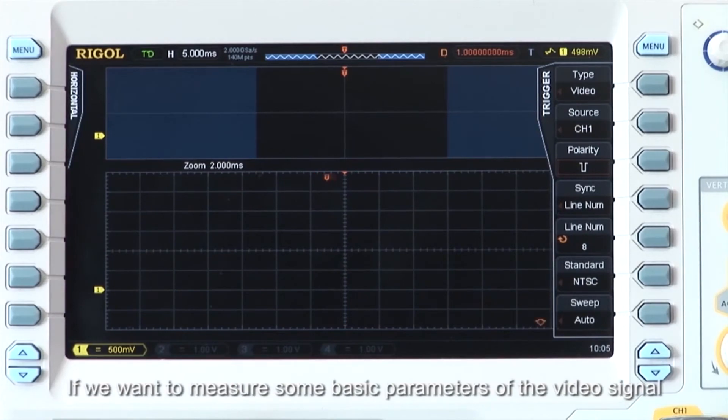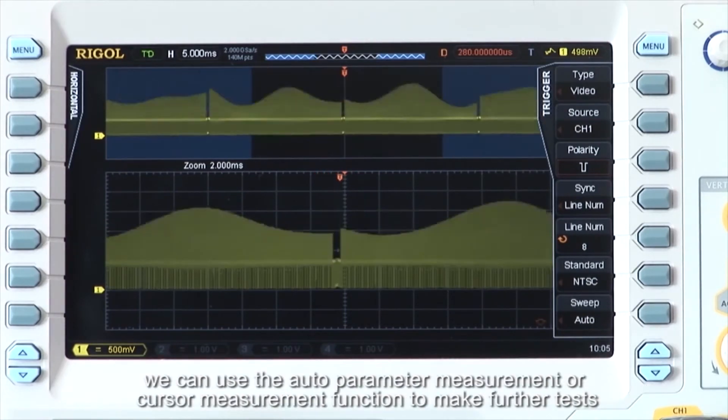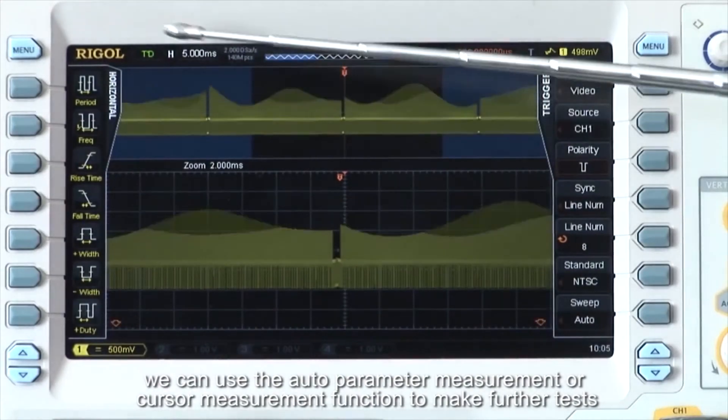If we want to measure some basic parameters of the video signal, we can use the auto-parameter measurements or cursor measurement functions to make further tests.